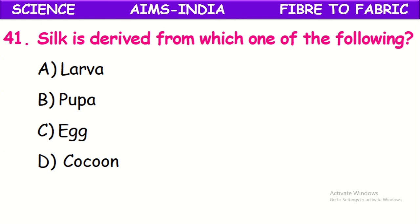Silk is derived from which of the following? Silk is derived from the cocoon — from the cocoon of the silkworm, silk is obtained.